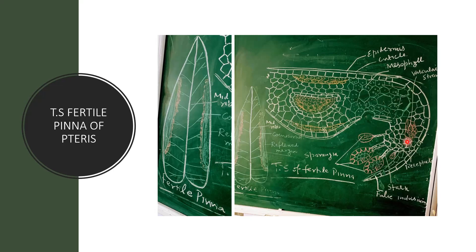The part of the leaf turns downward — this is called the false indusium. We can see a cushion-like structure here called the receptacle, and this is the vascular supply to the receptacle, meaning xylem and phloem. On the receptacle or cushion-like structure are present groups of sporangia. A group of sporangia is called a sorus; sori is the plural word. These are the young sporangia and these are the mature sporangia. This is the internal structure of the fertile pinna or leaflet of Pteris.